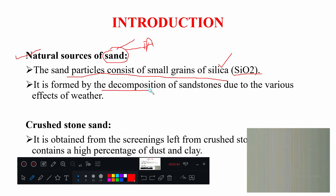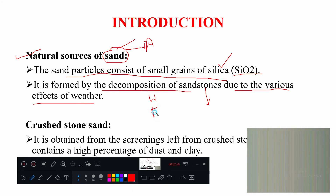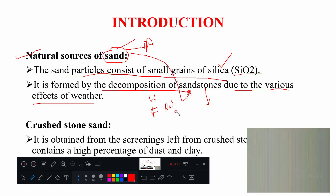Sand or fine aggregate is formed by the decomposition of sandstones due to various effects of weather — maybe wind, friction, or river water. These external effects cause decomposition or weathering, which produces sand from sandstones.